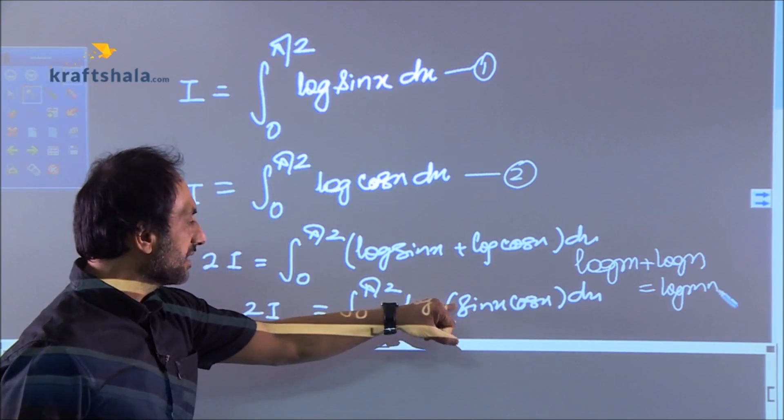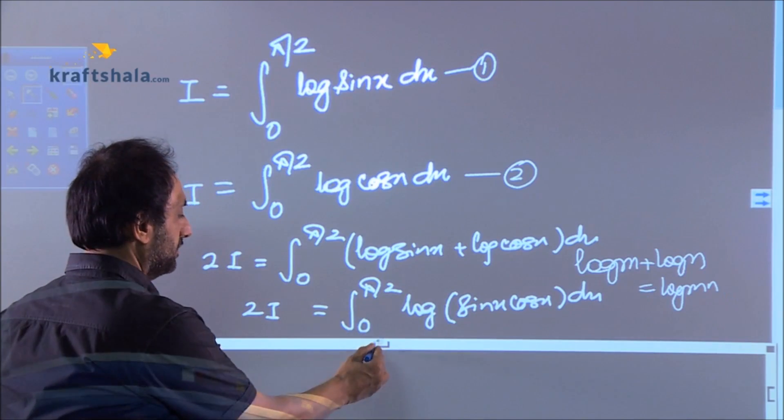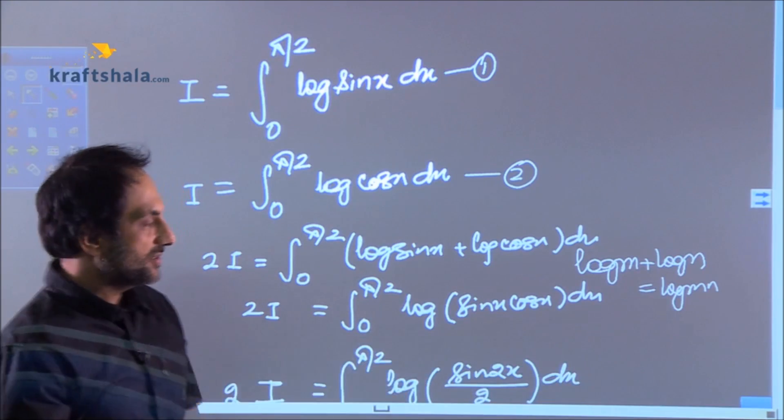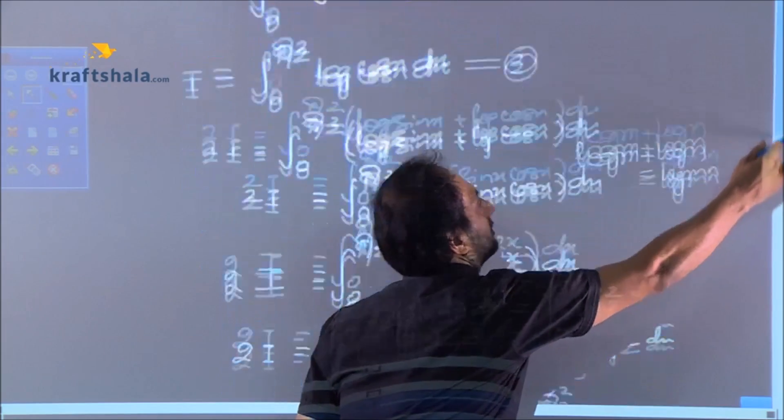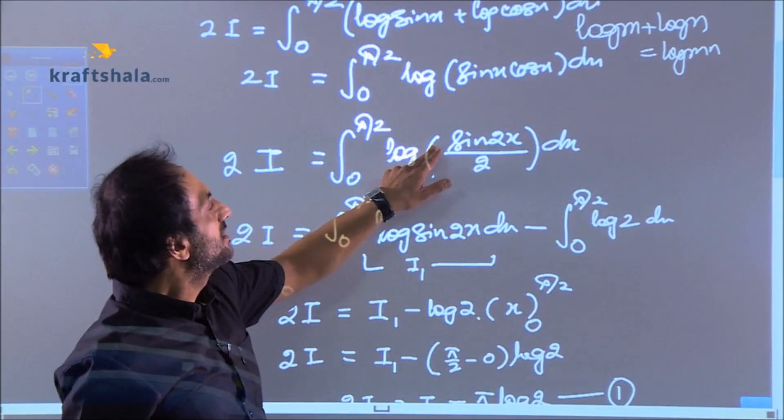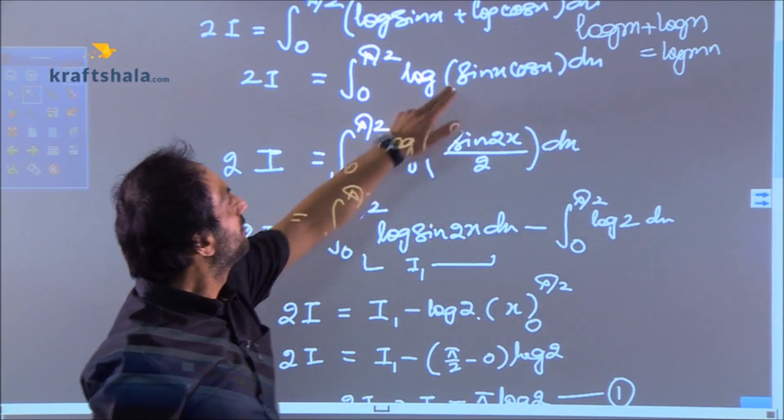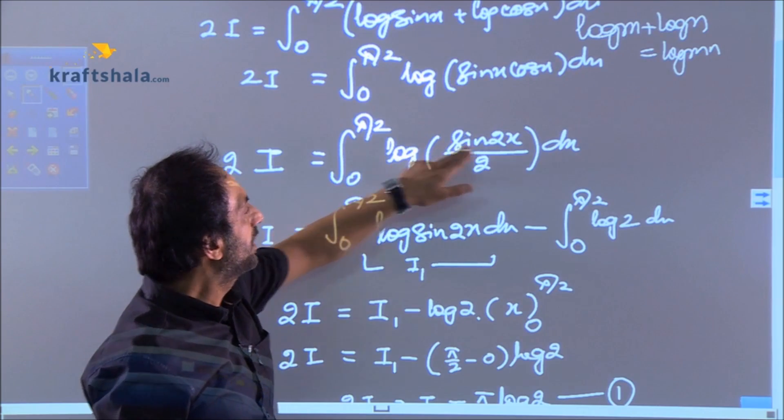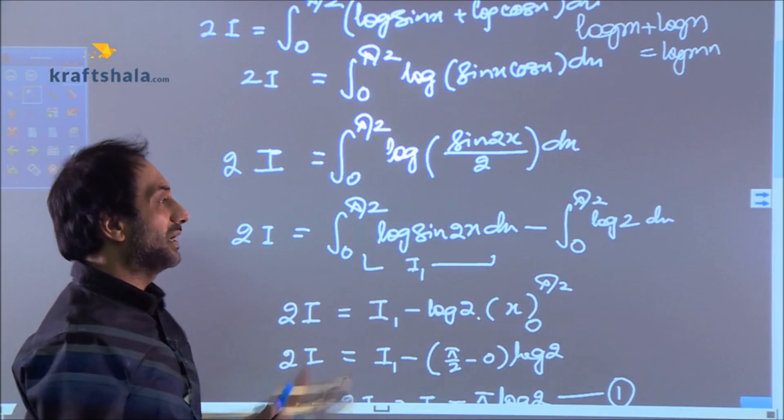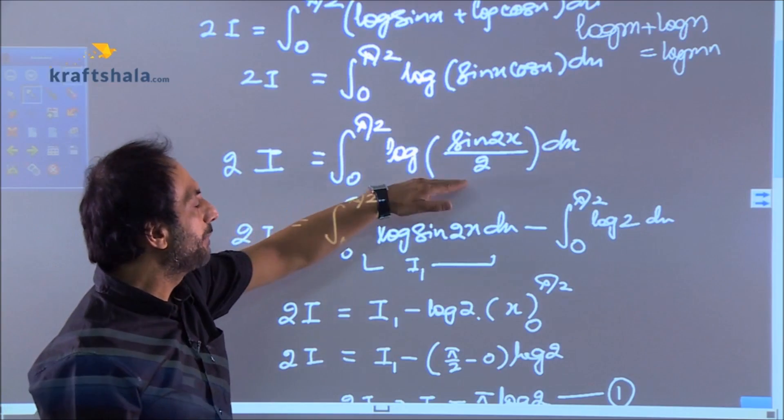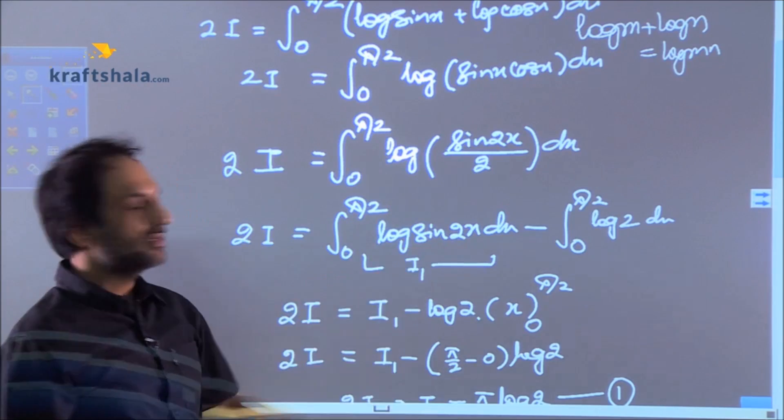So don't wait. Multiply and divide by 2 inside like this. And you get sin 2x by 2. Multiplying and dividing by 2 and you get sin 2x by 2. Now what? You apply log m by log n and you get this.